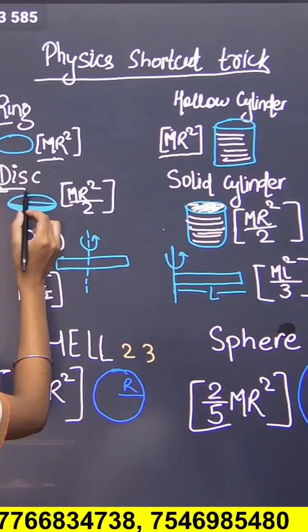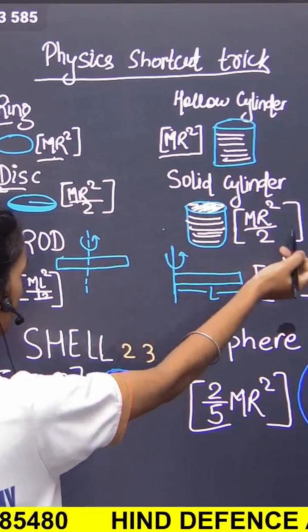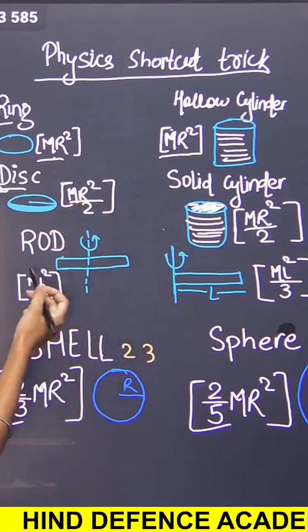Disc. D for divide, so ring formula divided by 2. That is called disc formula. Solid cylinder is same as the disc formula.